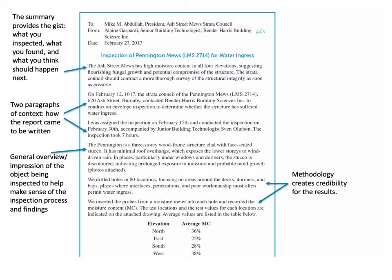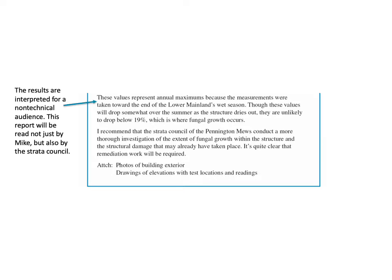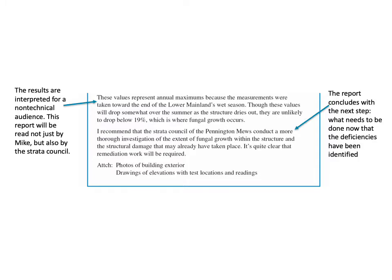The methodology section creates credibility for the results — it spells out what was done and how the results were obtained. Lists and tables make the deficiencies easy to find and follow up on. The results are interpreted for a non-technical audience, since this report will be read not just by one person but also by the Strata Council. Keep in mind that not everybody who sees this information will be highly technically skilled, so you have to make sure the information comes across in a way that everybody can understand.